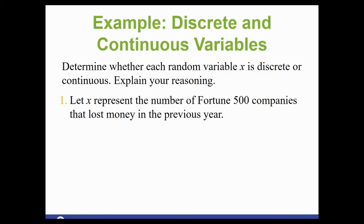So here's a couple examples just to determine whether it is discrete or continuous. Number one, let X represent the number of Fortune 500 companies that lost money in the previous year. In this case, we are counting the number of companies. One company, two company, three. This would be discrete.